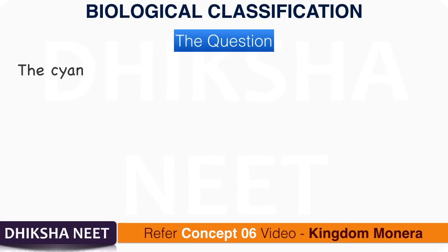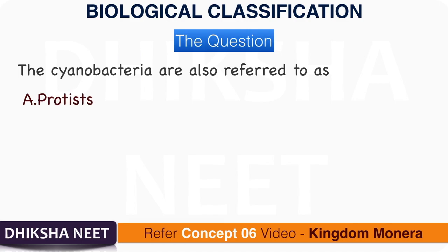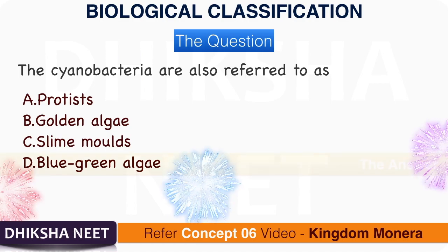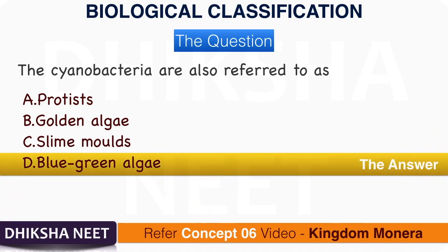Question 7: The cyanobacteria are also referred to as: A. Protists. B. Golden Algae. C. Slime Molds. D. Blue Green Algae. The answer is option D, Blue Green Algae.